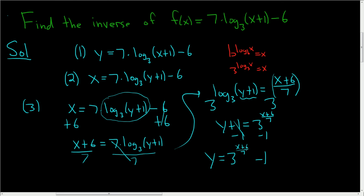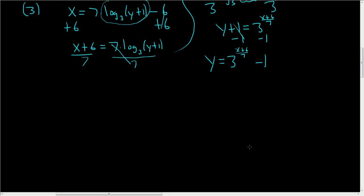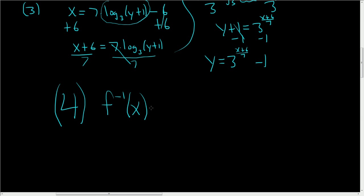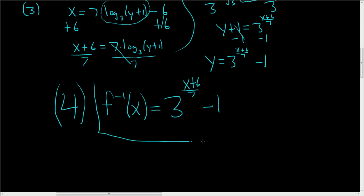To finish, write down the answer using the correct notation. Step 4: f inverse of x is equal to 3 to the x plus 6 over 7, minus 1. And that is the inverse function we were looking for. I hope this helps.